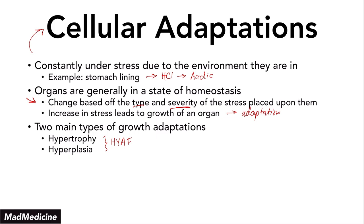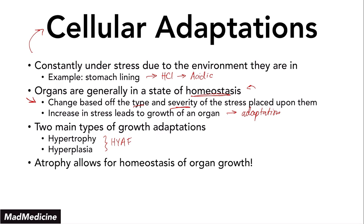What happens when you take the stress away from an organ? Our organs and our body are in a state of homeostasis, so if you take away the stress, our organs are going to go back to normal size, and that happens through atrophy. Atrophy allows for homeostasis of organ growth to occur. It allows our organs to shrink back to their normal size — a topic we've discussed in previous videos that is also very high yield.